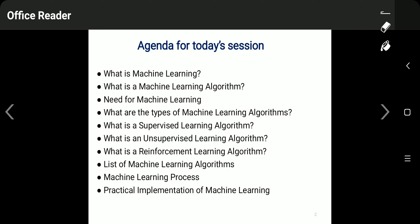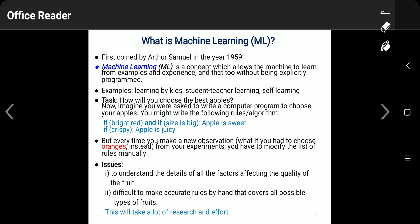The term machine learning was coined by Arthur Samuel in 1959. Machine learning is a concept which allows the machine to learn from examples and experience without being explicitly programmed. We don't have to write down a program explicitly; the algorithms are themselves capable of learning in order to find out patterns and recognize problems.